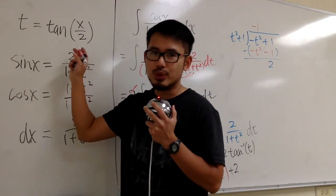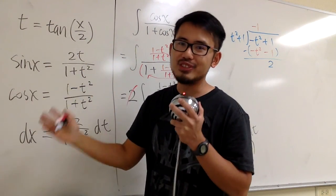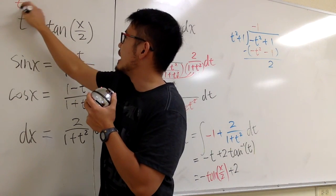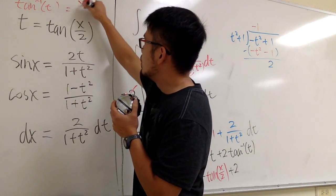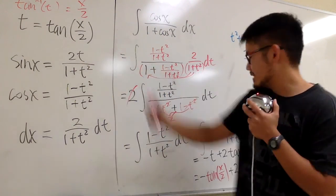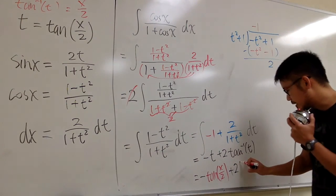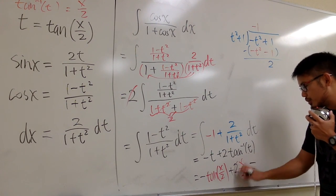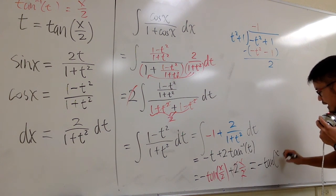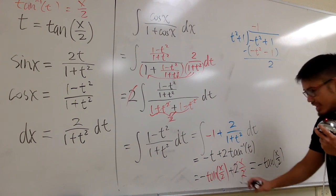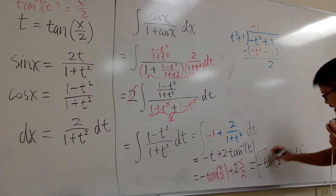At the end, we take this back to the x-world. We know t = tan(x/2), so applying inverse tangent on both sides gives arctan(t) = x/2. So inverse tangent of t is x/2. This means the 2 and 2 cancel, and we can write the first part as −tan(x/2), plus 2 times (x/2), which is just +x. So the final answer is −tan(x/2) + x + C.